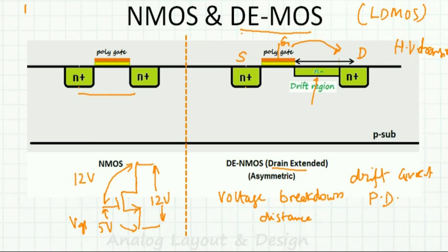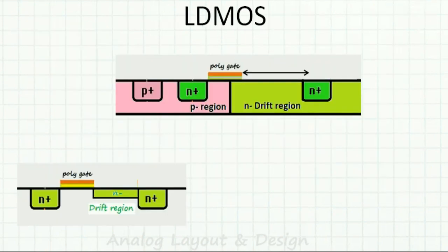The drain-extended MOS is also called DMOS, which stands for double diffusion MOS. In a standard NMOS there is only one diffusion (N+), whereas in DMOS we have both N-minus and N-plus — hence the term double diffusion MOS.